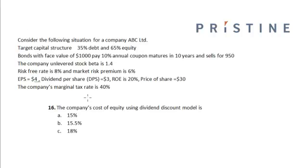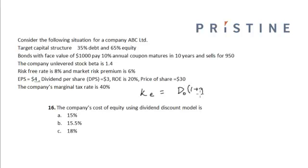Based on the same problem, the company's cost of equity using the Dividend Discount Model is: the cost of equity is equal to D0 into (1 plus G), where G is the sustainable growth rate, divided by the price of the share, plus G.